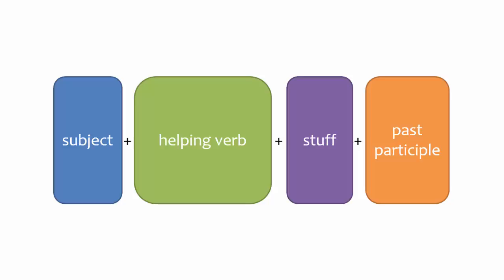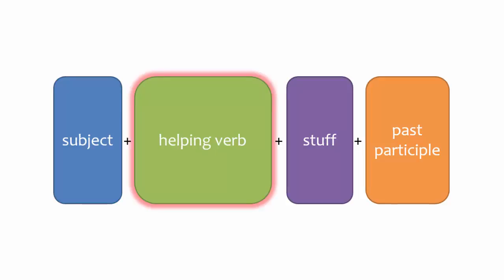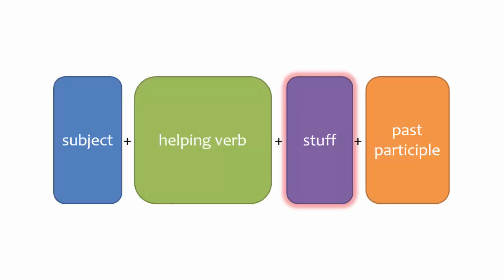More videos on the compound past tense are in the playlist. A typical sentence in the compound past is composed of the following: the subject, which is the person or object doing the action; a helping verb, which is discussed in a different video; and words that say when.